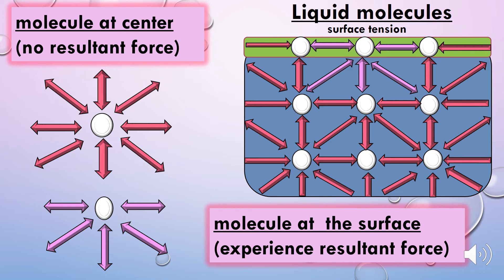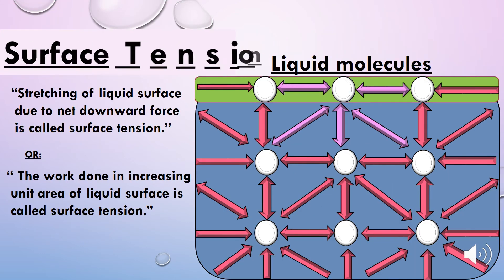So it experiences a net downward force due to which the liquid surface stretches. This is surface tension. Due to surface tension, the upper layer of the liquid acts like an elastic rubber, so the stretching of the liquid surface due...